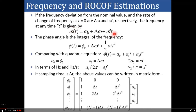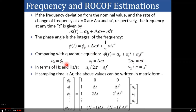If you integrate this expression you will get the phase angle, represented as phi(t) = phi naught + delta omega * t + (1/2) * omega dash * t squared. Comparing this with the quadratic equation phi(t) = a naught + a1*t + a2*t squared, we can say: a naught = phi naught, a1 = delta omega, and 2*a2 = omega dash.